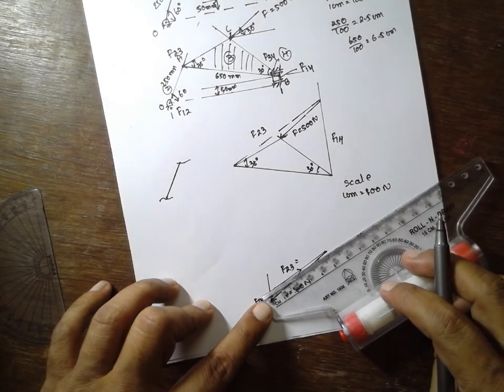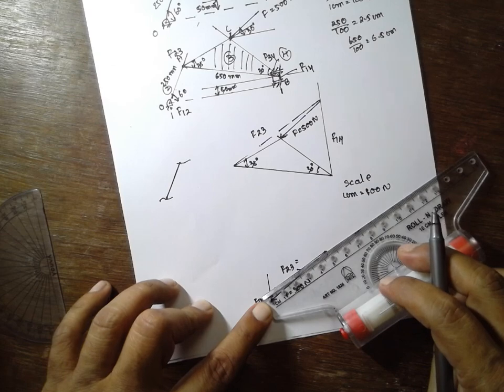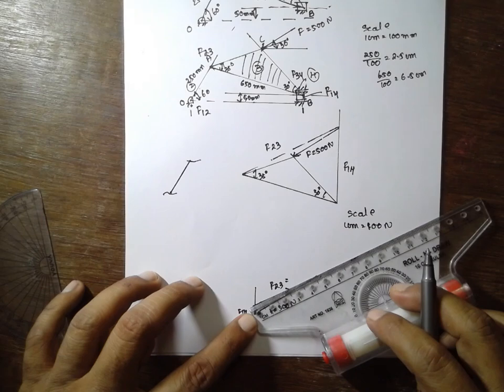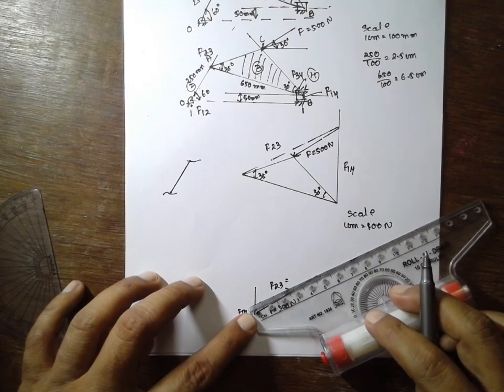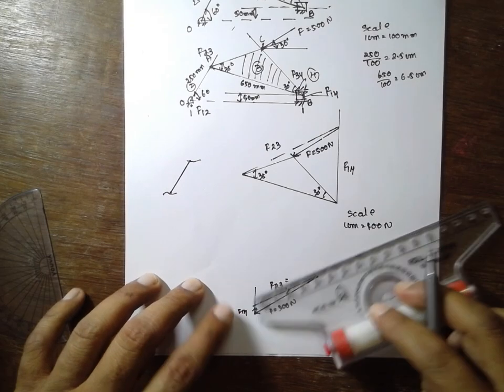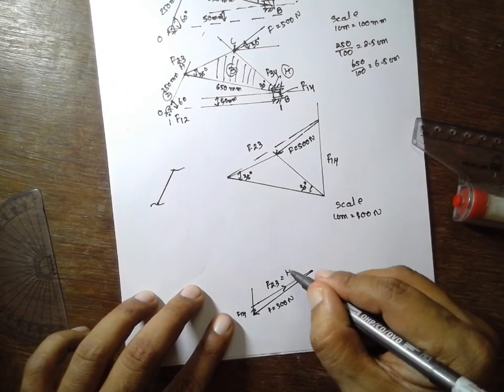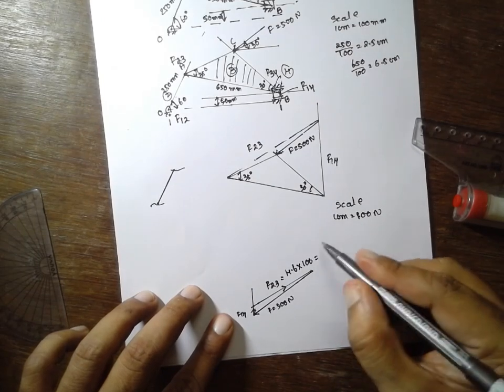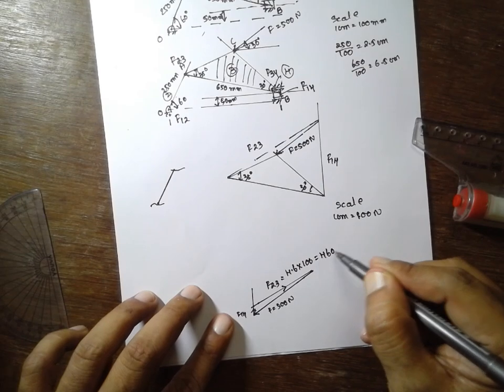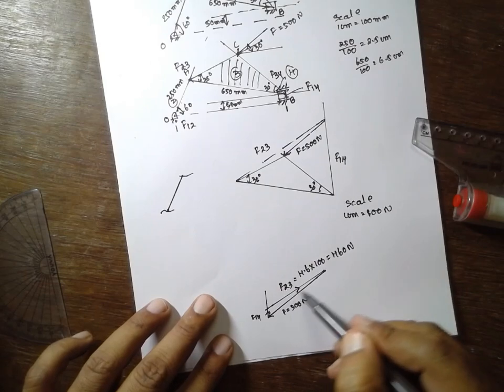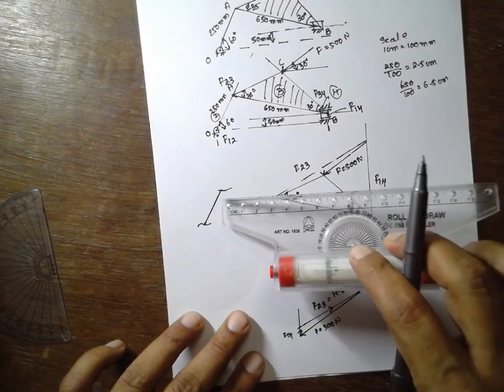Calculate the value. It will be around 4.6 cm. 4.6 into scale 100 Newton. The answer will be 460 Newton. Once you know the arrow direction, you can implement this part.